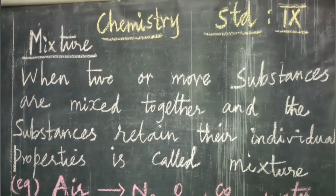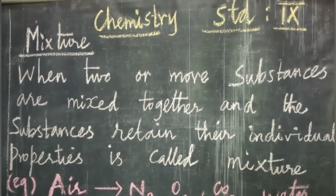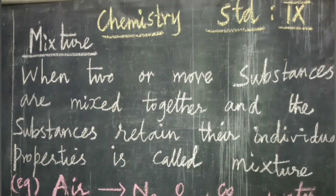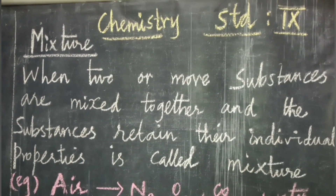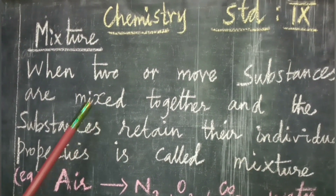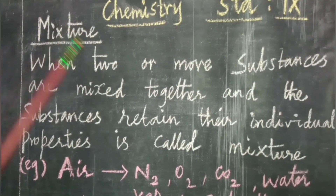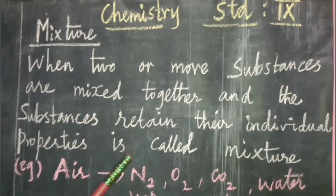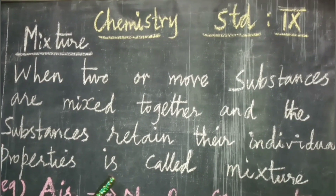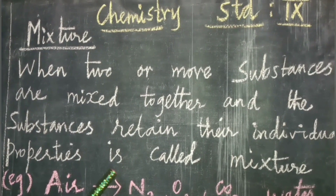Good morning students, welcome back to the chemistry lesson: Matter Around Us. The first topic is element, the second topic is compound, and the third topic is mixture. What is an element? An element is a substance that cannot be broken down chemically.